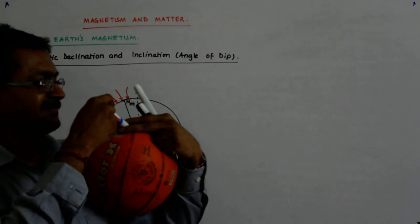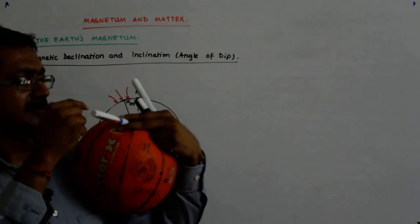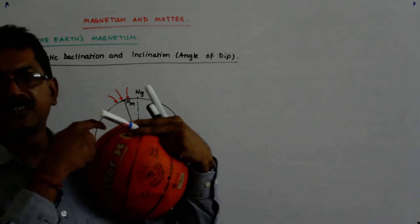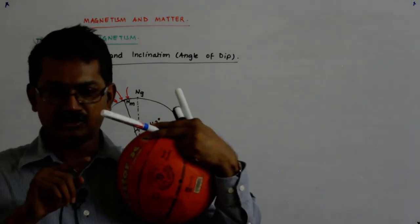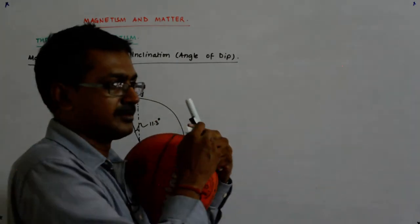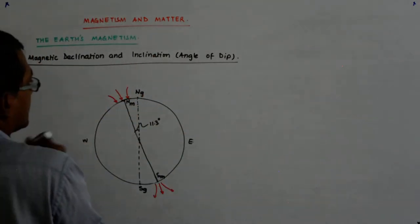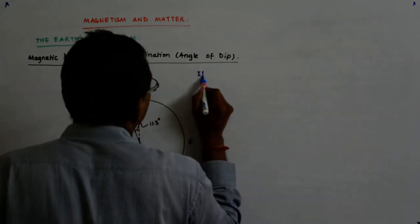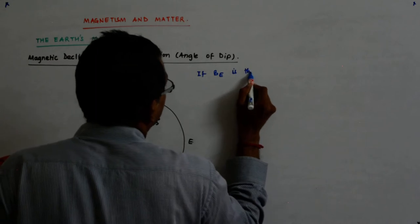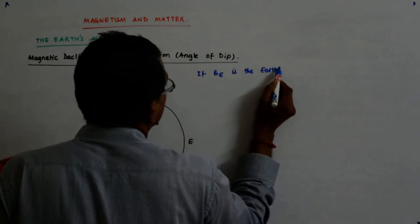Now you understand, this pen represents your magnetic field, Earth's magnetic field. That's why we call it B_E, B Earth, magnetic field of Earth. So if B_E is the Earth's magnetic field, is the Earth magnetic field, then what happens?